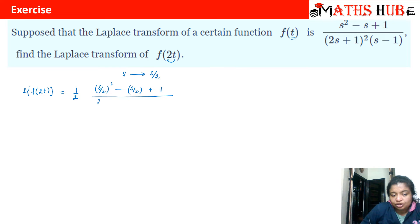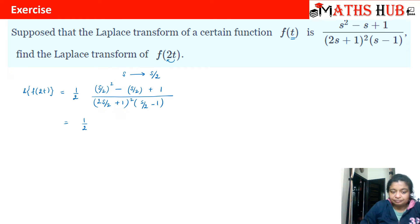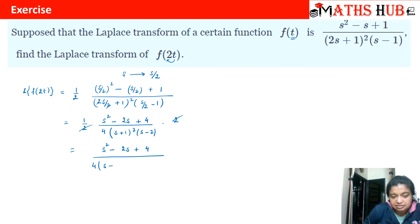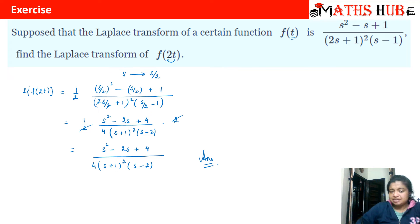So Laplace of f(2t) will be (1/2) · F(s/2). The multiplier gets divided and wherever in the answer we have s it shifts to s/2. In the denominator we get (2·(s/2) + 1)² · (s/2 - 1). Taking the LCM in the numerator gives (s²/4 - s/2 + 1). After simplification the 2s cancel and we get (s² - 2s + 4) / (4·(s + 1)² · (s - 2)). I hope you understand what is happening when we multiply with 2 — on the right hand side it gets divided by 2.